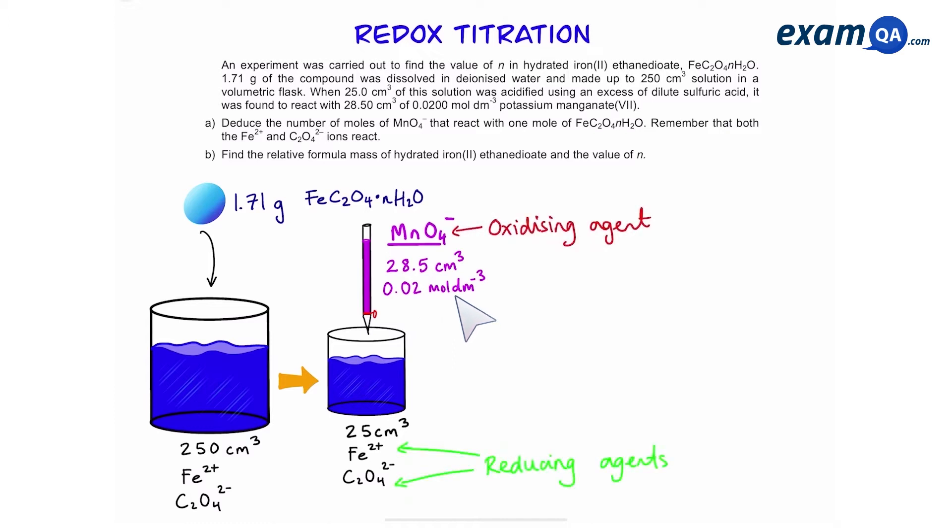So remember manganate is the oxidizing agent and Fe²⁺ and ethane di-O8 are both reducing agents, which means manganate is going to be reacting with both of them.